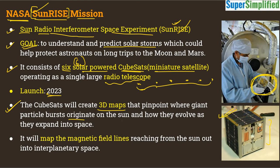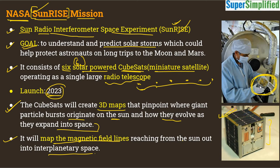The CubeSats will create a 3D map that will pinpoint where the giant particle bursts originate on the Sun and how they evolve as they expand into space. It will also create a map of the magnetic field lines reaching from the Sun out into interplanetary space — studying how solar storms originate, what factors drive them, how they travel to Earth, and where their impact is mild versus high. This mission was announced by NASA on 30th March 2020 and will be launched in 2023.